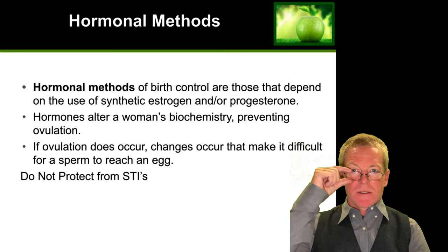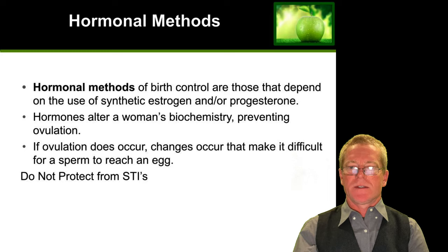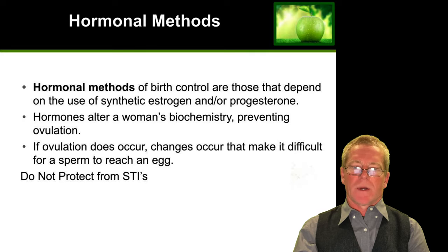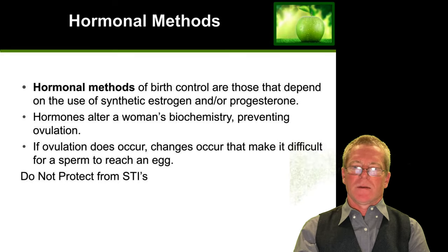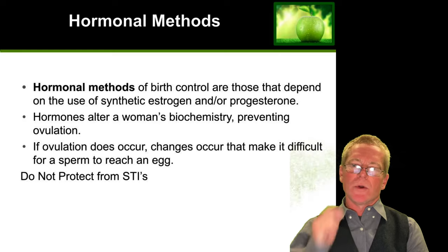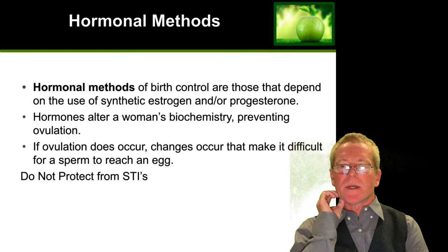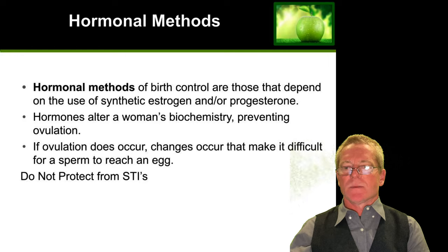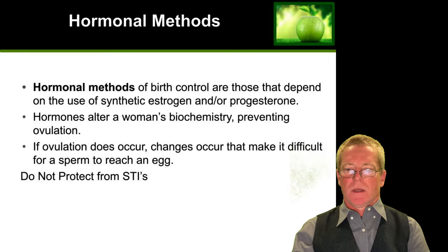Then there are hormonal methods, which are different from barrier methods. They typically provide either synthetic estrogen or progesterone that alters female biochemistry, preventing the egg from ovulating and thereby preventing the sperm from reaching the egg. These methods do not provide protection from sexually transmitted diseases. Hormonal methods include the progesterone-only pill, contraceptive patches, vaginal contraceptive rings, and contraceptive injections or implants — all effective methods to prevent pregnancy.